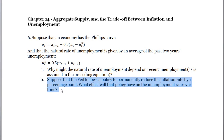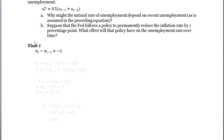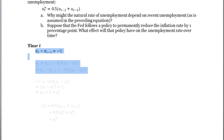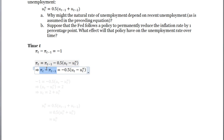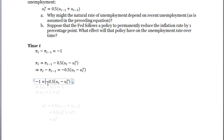For Part B, suppose the Fed follows a policy to permanently reduce the inflation rate by one percentage point. The Fed wants today's inflation minus yesterday's inflation to equal negative one. Let's rewrite the Phillips curve so that the change in inflation equals the negative of the unemployment gap term. The policy goal is to make this change equal to negative one.